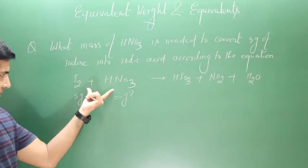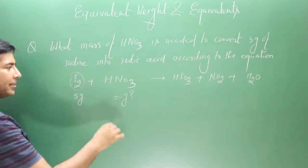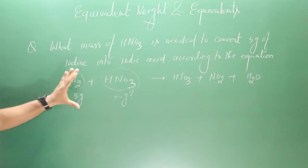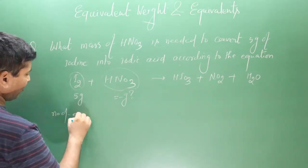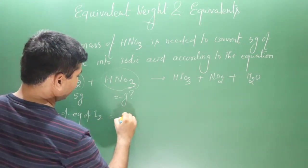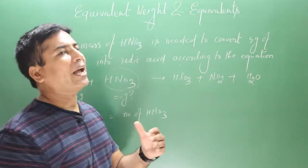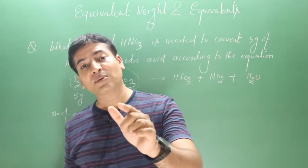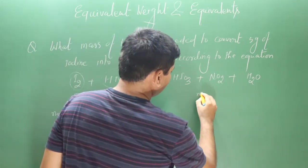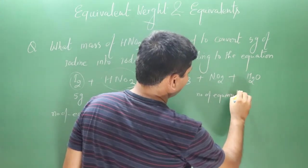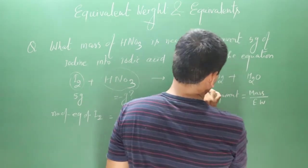Number of equivalents of each reactant equals number of equivalents of each product. Data is given for iodine and we need to find the quantity of nitric acid. So: number of equivalents of I₂ = number of equivalents of HNO₃. The formula is: number of equivalents = mass / equivalent weight = (mass / molecular weight) × n-factor.